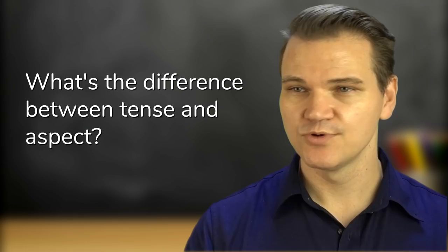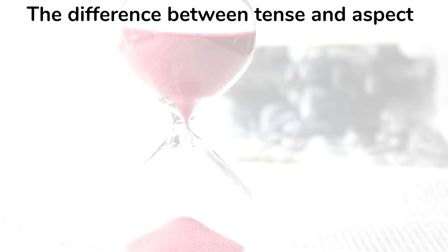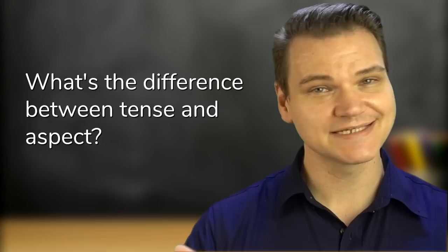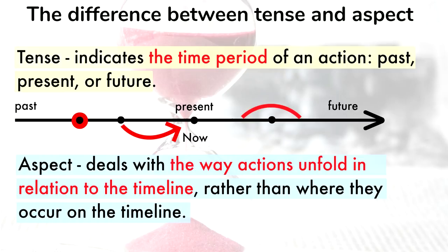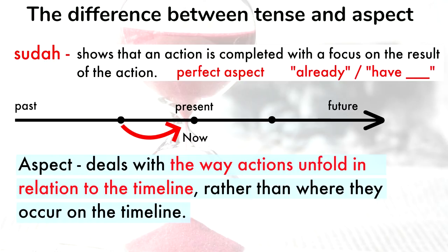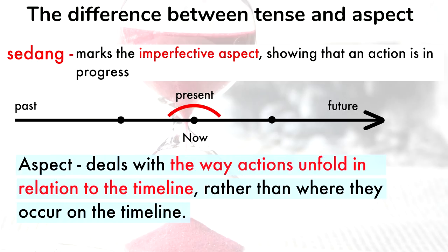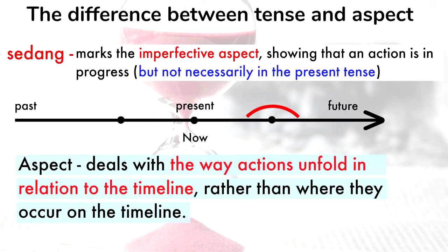What's the difference between tense and aspect? As I mentioned before, tense indicates the time period of an action: past, present, or future. Aspect deals with the way actions unfold in relation to the timeline, rather than where they occur on the timeline. Sudah shows that an action is completed with a focus on the result of the action. We could call this perfect aspect. Sedang marks the imperfective aspect, showing that an action is in progress, but the action is not necessarily in the present tense. Masih also marks the imperfective aspect, showing that an action is continuing, but with an emphasis on the fact that it's not yet finished. These are just three of the many aspect markers in Indonesian.